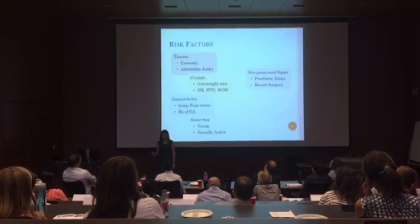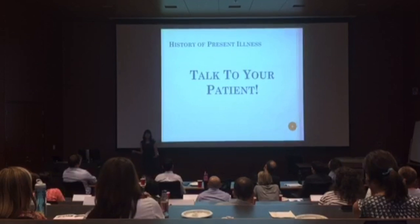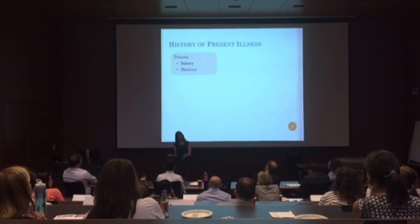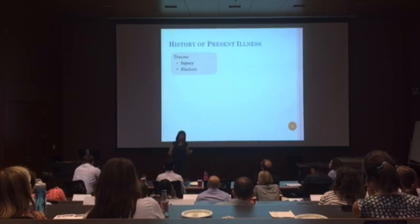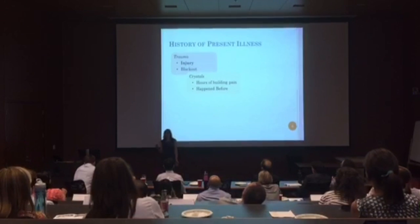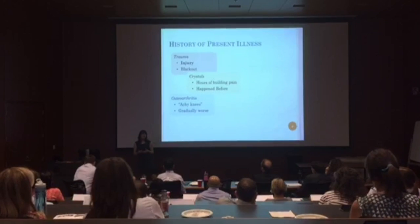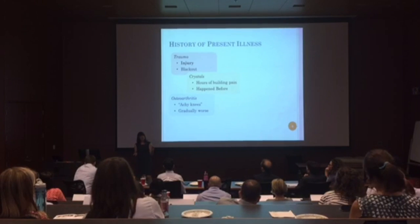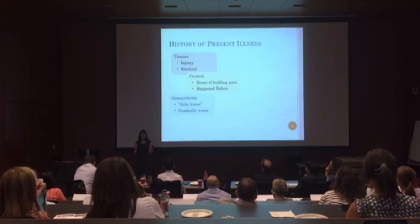After you consider your patient's risk factors, move on to actually talking to your patient. Ask them: tell me the story of how this presented. For trauma, you should hear about how they injured it — they remember a fall, they fell from a height, or there's a reason they don't remember it, like a drinking binge. For crystallopathy, they may describe hours and days of building pain, likely something that's happened before. For osteoarthritis, they'll describe achy pains worse later in the day, and if you tease out the timeline, it may not be so acute — perhaps subacute, building over weeks.